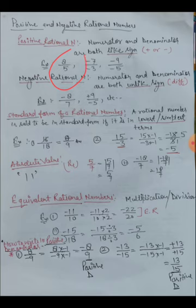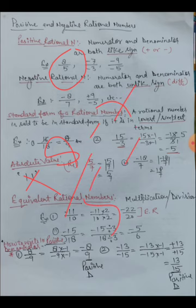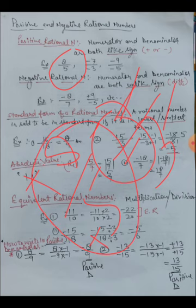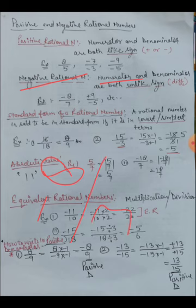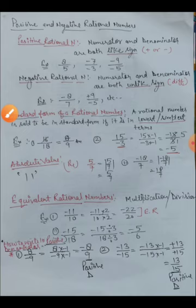For example, plus eight upon five and minus seven upon minus three are both positive rational numbers because both numerator and denominator carry the same sign. For a negative rational number, the numerator and denominator have different signs. For example, minus eight upon three — the numerator is negative and the denominator is positive — these are different signs, making it a negative rational number.